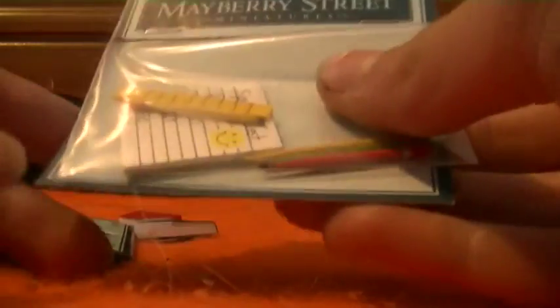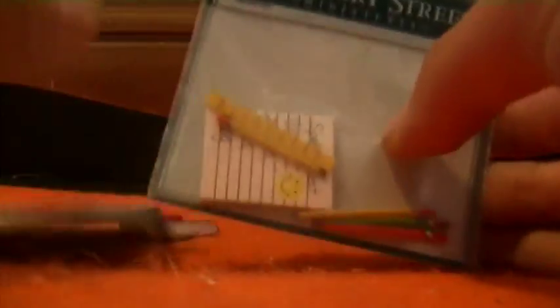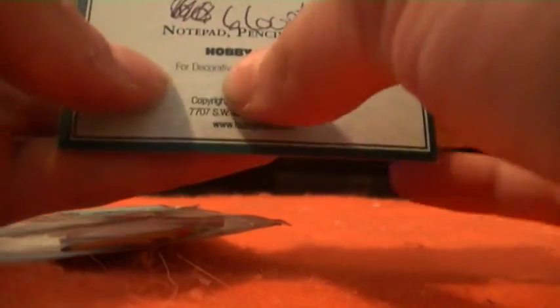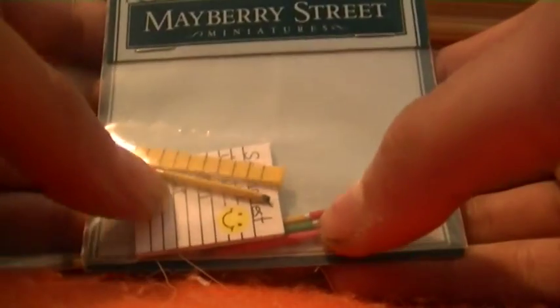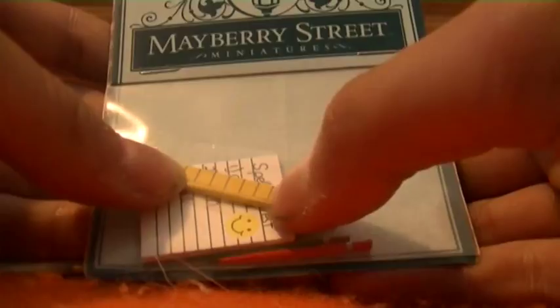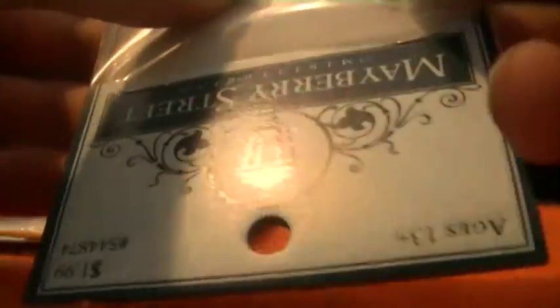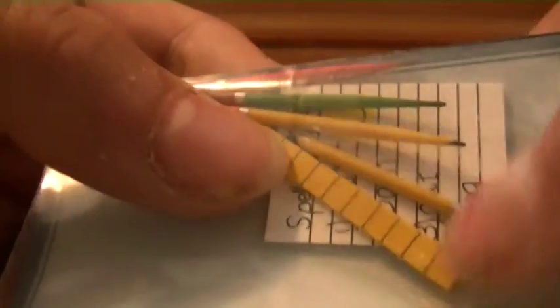So the first thing that I grabbed were two of these. Now these come with four little pencils, three there, one there, a ruler, a little tiny ruler, and a mini sketch. So I'm going to show you because this package was already open. I opened it in the car and I taped it back shut.